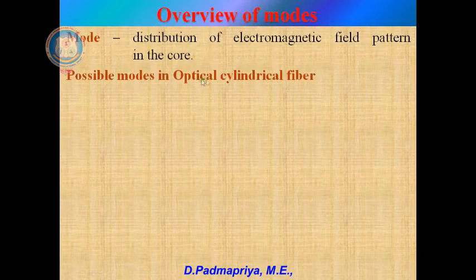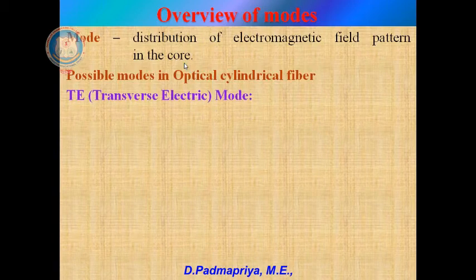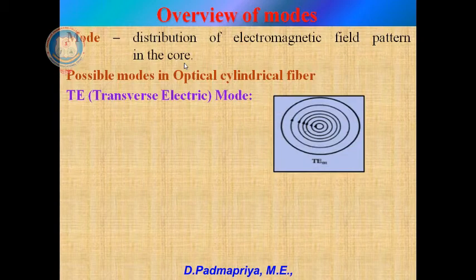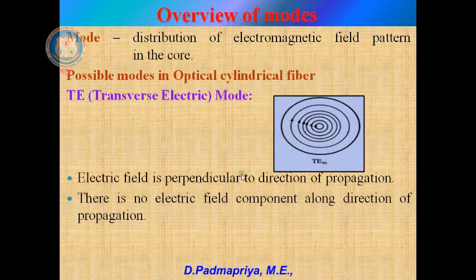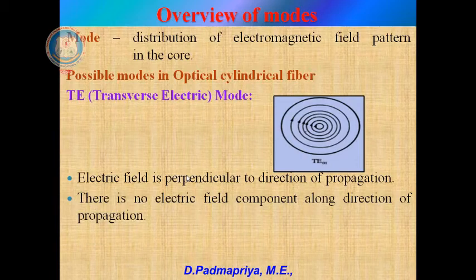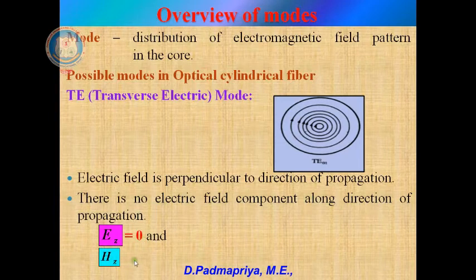Next we will see the different modes of propagation. A mode is generally a distribution of electromagnetic field pattern in the core. Light has a dual nature — particle or wave — and is a form of electromagnetic radiation with oscillating electric and magnetic fields. Based on this, modes are classified as transverse electric mode (TE mode), in which the electric field is perpendicular to the direction of propagation and the magnetic field is normal to it. There is no electric field component along the direction of propagation, so Ez = 0 and H_z exists.